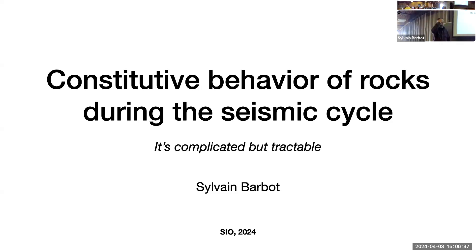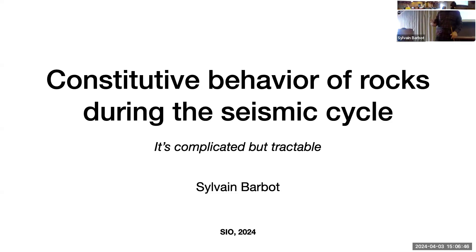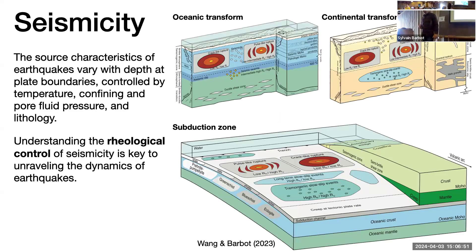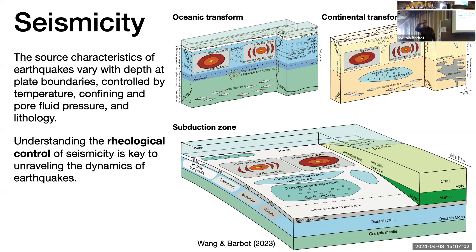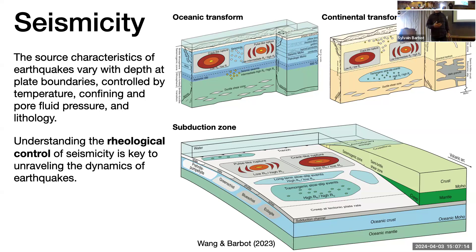I'm going to describe how we understand and can predict the constitutive behavior — things like the relationship between normal stress and shear stress at a fracture, and explain where that comes from. The motivation is that when we want to understand earthquakes, and perhaps in the long term predict earthquakes or aspects of seismicity, we look at every major plate boundary and natural seismicity and see patterns: oceanic transforms, continental transforms like the San Andreas, and subduction zones — all showing a depth dependence of rupture styles.